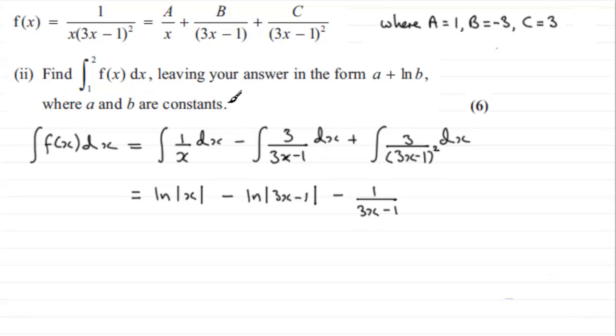We found out in the previous part of the question that the integral of f of x with respect to x was the natural log of mod x minus the natural log of the mod of 3x minus 1 minus 1 over 3x minus 1. So if you'd like to give this part a go, just pause the video if you haven't done it already, come back when ready, and I'll run through the work solution.